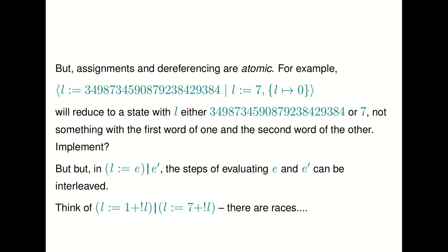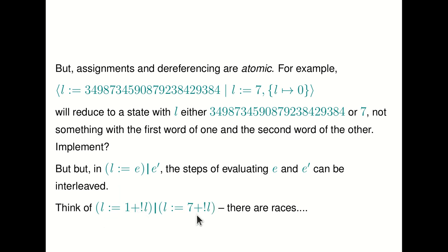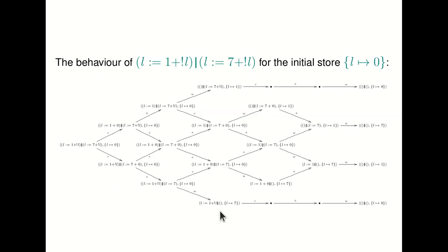In our language, stores and loads are all atomic. What is not atomic is the interleaving between these atomic steps and larger programs. If you have an assignment running in parallel with another program, the steps of evaluating expression e to a value can be interleaved with evaluating e prime. It's only when you see l:=v that you get an atomic update. So if you set l to 1 plus the contents of l, and in parallel l to 7 plus the contents of l, there will be races because it takes several steps to evaluate those expressions — we have to dereference l twice.